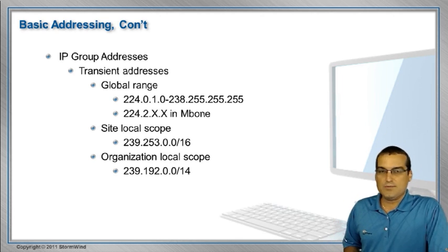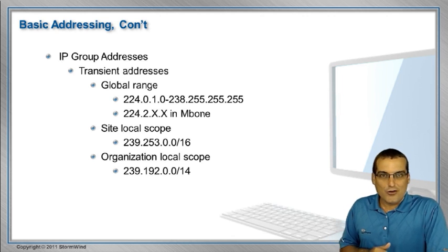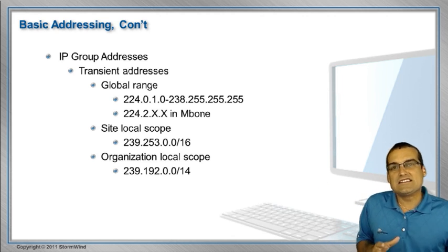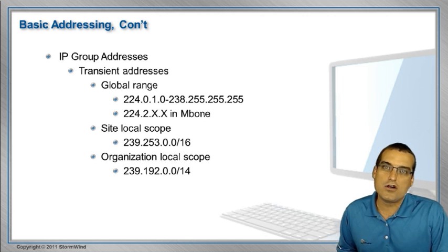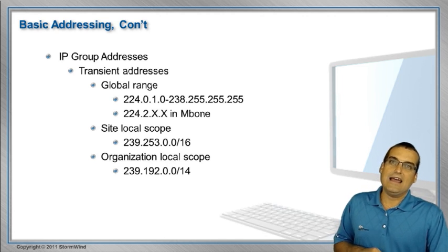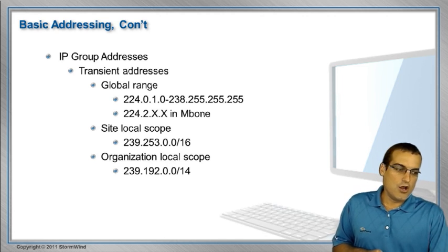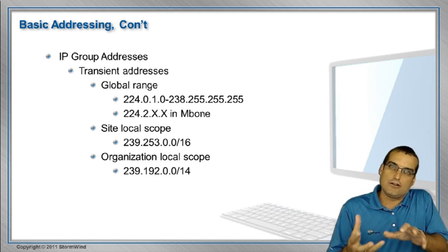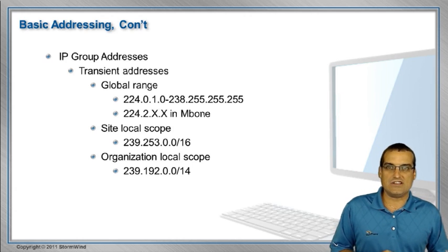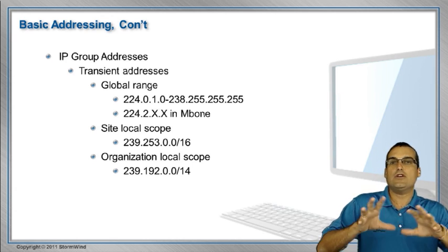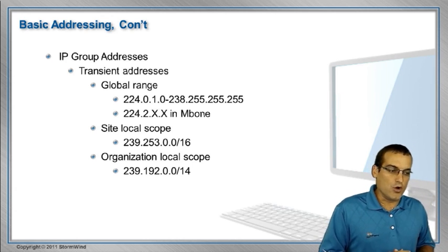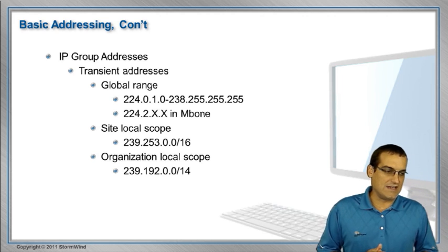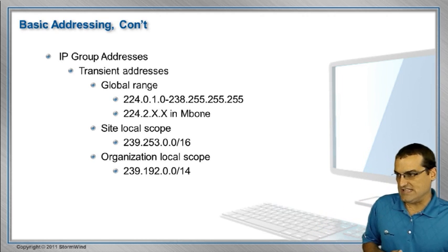Site local scope is pretty neat — this kind of reminds us of our RFC 1918 IP addresses. We can use 239.253.0.0/16 for site local scope applications of multicast. And we even have an organization local scope at 239.192.0.0/14.